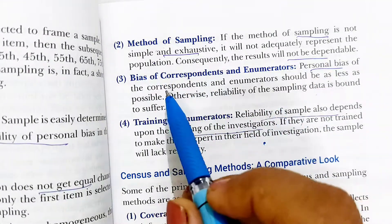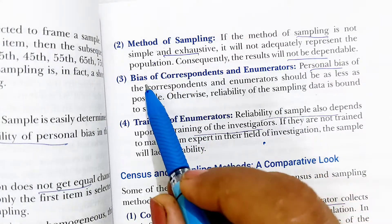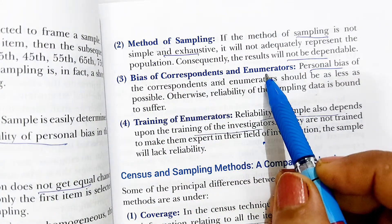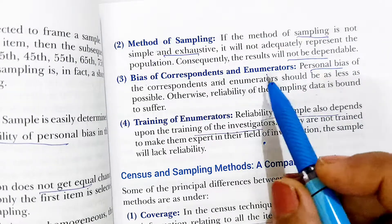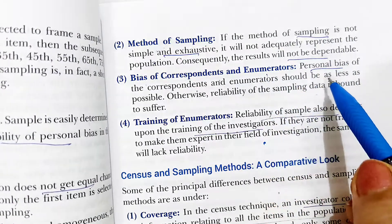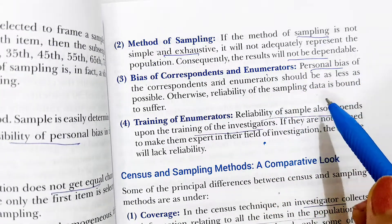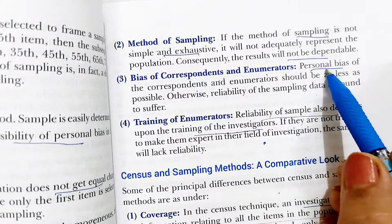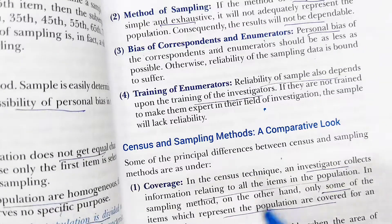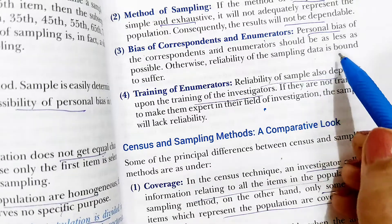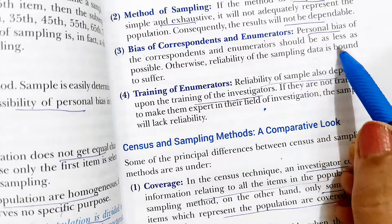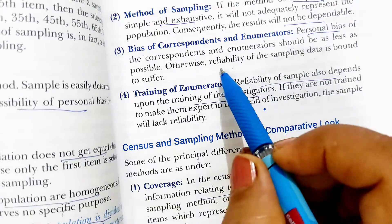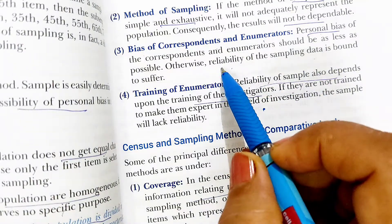Next is the bias of the correspondent and enumerator. The investigator or enumerator who is going to collect the sample — if this person is biased while collecting the data, then the result will not be very much reliable.